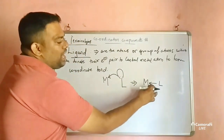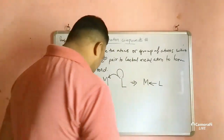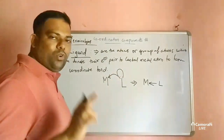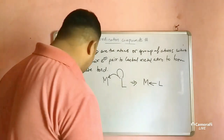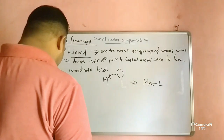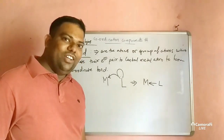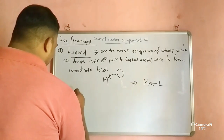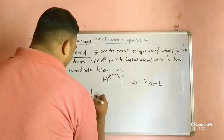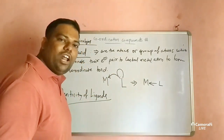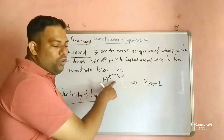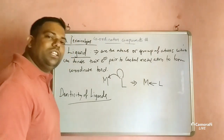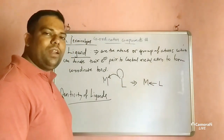On the basis of the number of donor sites, ligands can be classified into types. This is called the denticity of ligands. One lone pair or one negative charge or one molecule means monodentate ligand.